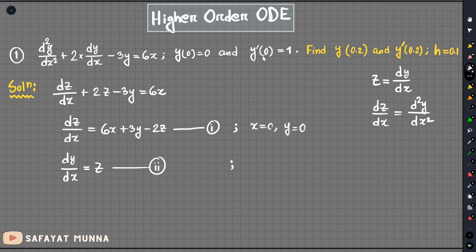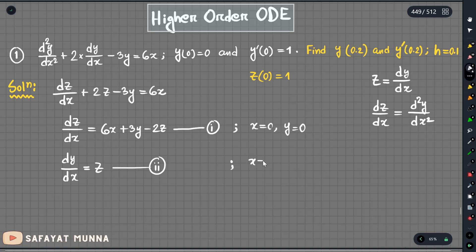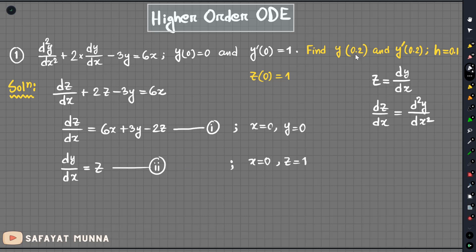y prime means dy/dx, and we let z equal that. So z value at x equals 0 is 1. And dy/dx, meaning z, at x equals 0 is also 1. We will use the initial conditions to find y at 0.2 and y prime at 0.2 using Heun's method.